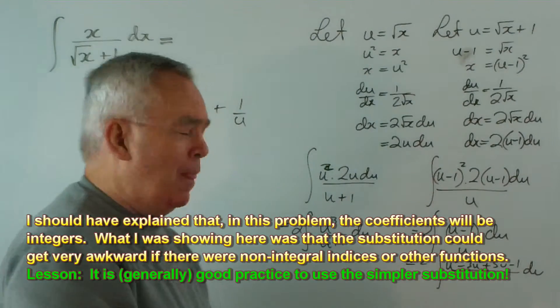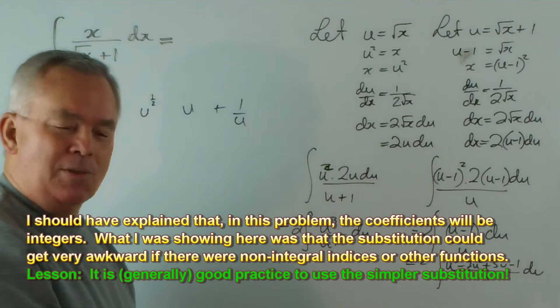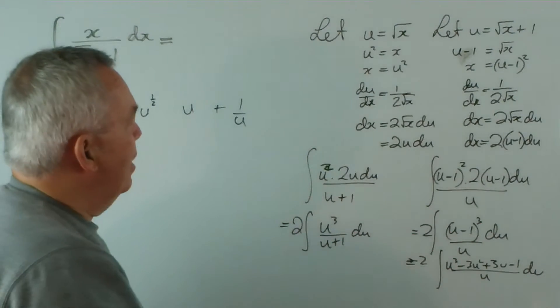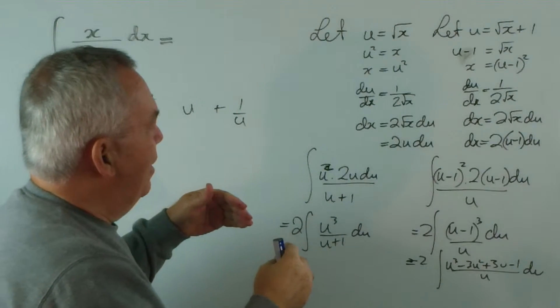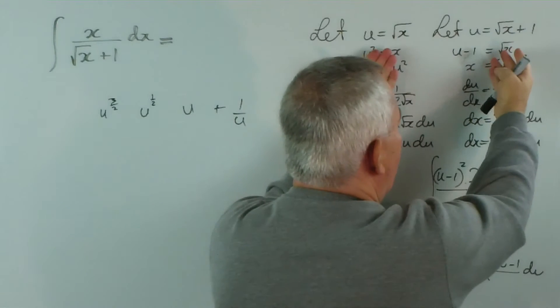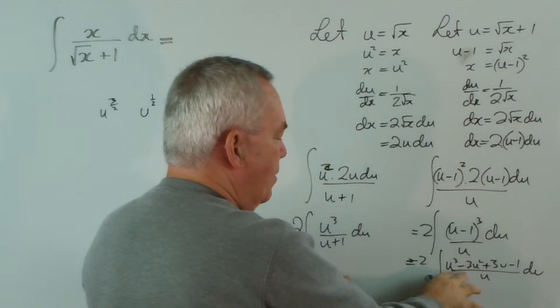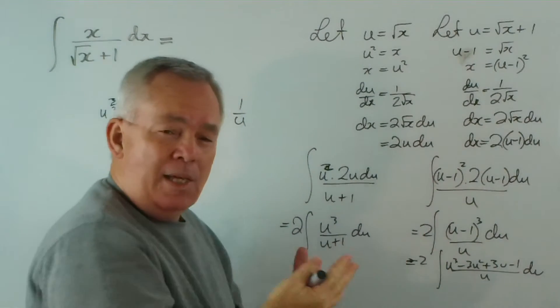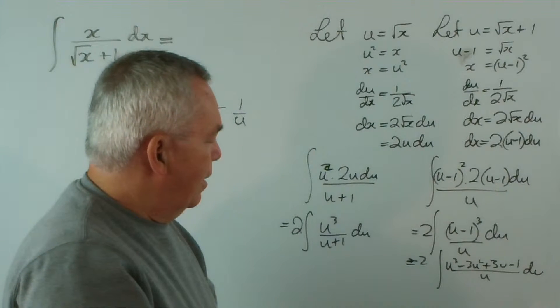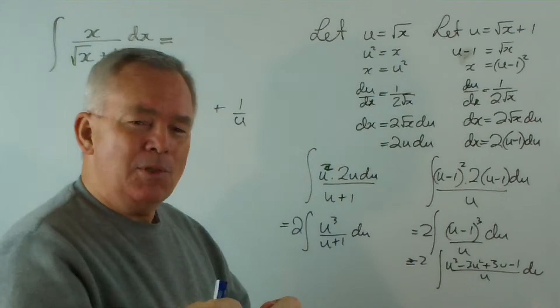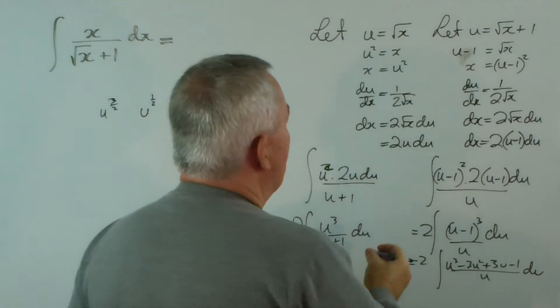When we come to substitute back in, in place of u, here we replace this with a root x. But if we have to use this substitution, our u has to be replaced by root x plus 1. And you see at the substitution stage, after we've done our integration, we don't want to be substituting a binomial, certainly inside radicals and things like that. It just gets tacky. Now, it's doable, it is absolutely doable, but it's just more work than you care for.